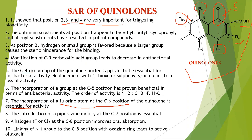The introduction of a piperazine moiety at the C7 position is essential for broad-spectrum antibacterial activity, as seen in the ciprofloxacin structure. Halogens — fluoro and chloro — at the C8 position improve oral absorption, which is a pharmacokinetic property.